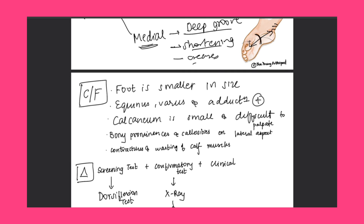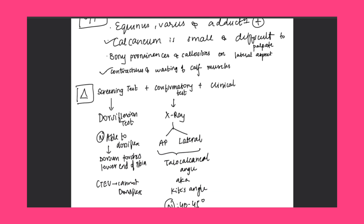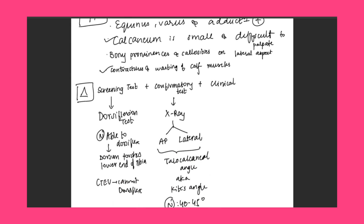Clinical features: the foot is smaller in size; equinus, varus, and adduction are positive; calcaneum is small and difficult to palpate; bony prominences and callosities are seen on the lateral aspect; contractures and wasting of the calf muscles are seen. The screening test is the dorsiflexion test: normally in a newborn, when we dorsiflex the foot, the dorsum touches the lower end of the tibia, but in CTEV we cannot dorsiflex the foot.